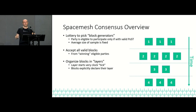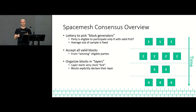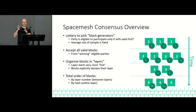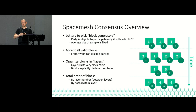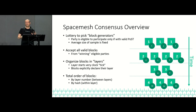How do we organize these blocks? We organize them in layers — one layer every clock tick, think of it as five minutes. Every block explicitly says which layer it belongs to, and honest users always put the right number. If we have layers and every block says which layer it's in, this gives us a total order over the blocks: first we order by layer number — anything in layer four comes after anything in layer three — and inside a layer we use the hash IDs of the blocks to order them. So we get a total ordering.